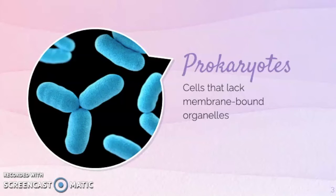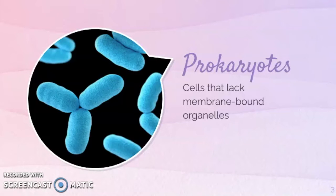Let's take a quick look at prokaryotic organisms once again. Remember, these are cells that lack membrane-bound organelles — take any bacteria as an example. We call them prokaryotic: 'pro' meaning pre, 'kary' meaning nucleus, so before nucleus. This figure shows a generalized prokaryotic cell structure. All prokaryotes have a nucleoid with chromosomal DNA, but they don't have a nucleus.